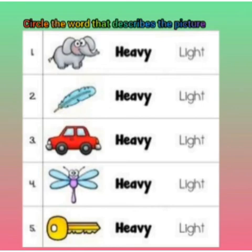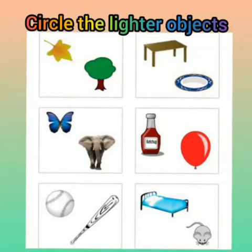What is the key — heavy or light? It depends on the key; some keys are heavy and some are light, but generally the key is light. When you see a tree and a leaf, the tree is heavy and the leaf is light, so you will circle accordingly.